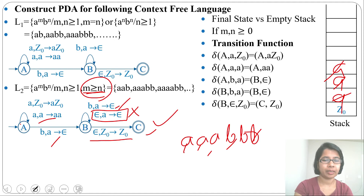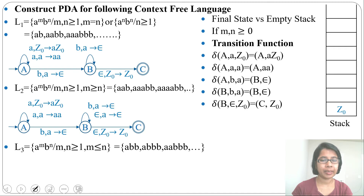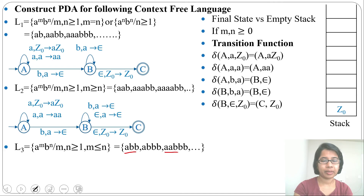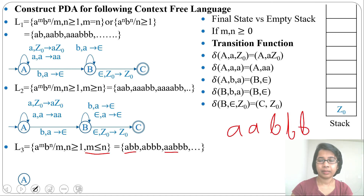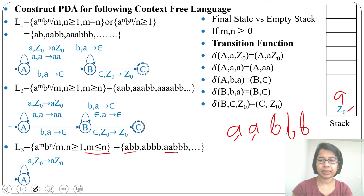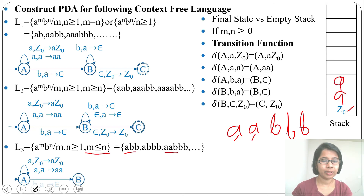Let's see another example: a^m b^n where m, n ≥ 1 and m ≤ n. Strings accepted include: 'abb', 'abbb', 'aabbb', and 'ab' (equal counts). Let's design the PDA. Take the string 'aabbb'. For the first 'a' with Z0 on top, push 'a' — use a self-loop: a, Z0 → aZ0. For the second 'a' with 'a' on top, push 'a': a, a → aa. Then for the first 'b', pop 'a': b, a → ε.